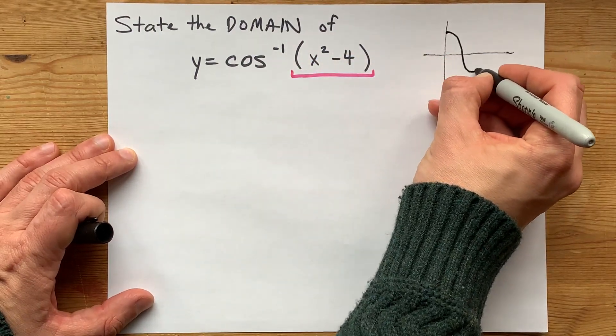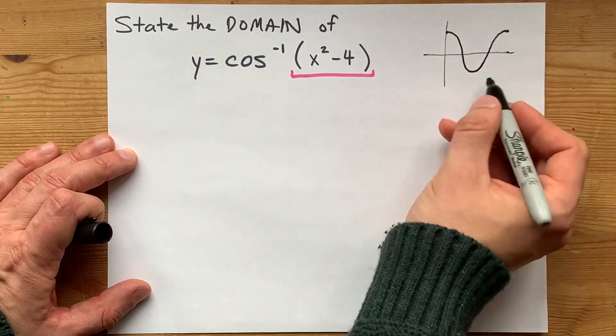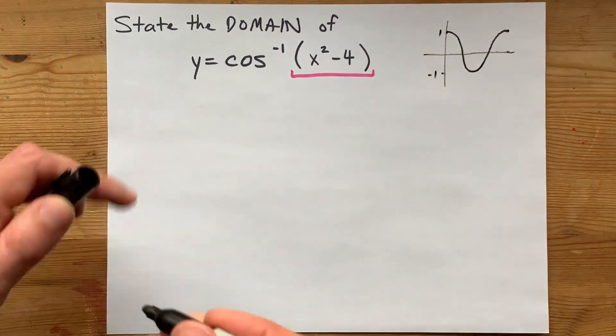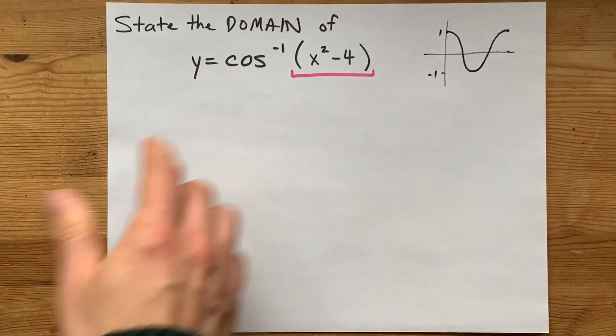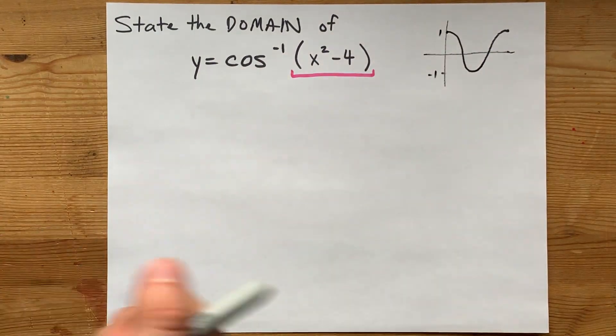Remember, your graph of cos looks something like this. What y values are you allowed to get out of regular cos? The answer is anything from negative 1 up to 1. And thus, you can't take the cos inverse of anything that isn't between negative 1 and 1.